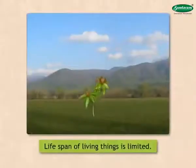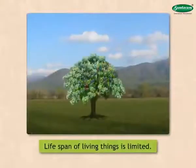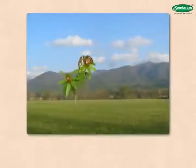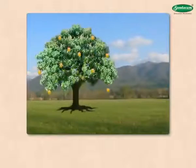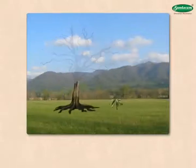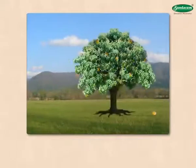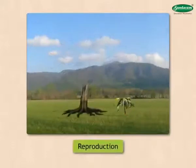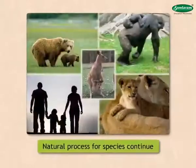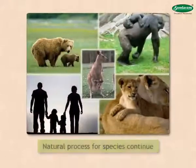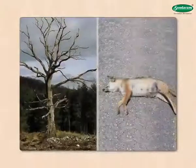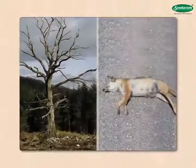The lifespan of all living things is limited. Living things produce other organisms like themselves and thus ensure the continuity of their species. This process is called reproduction. It is a natural process due to which the species continues to exist even if individual plants or animals of that type die.